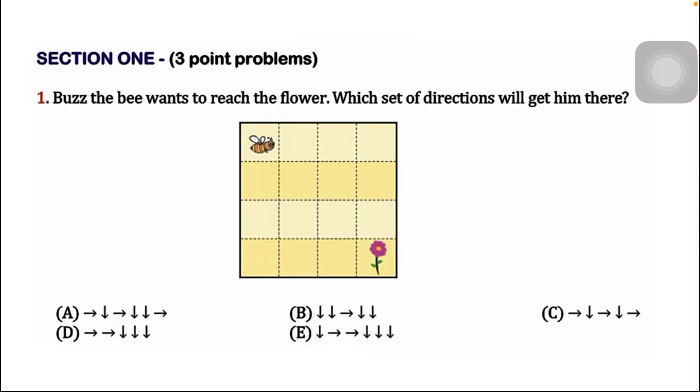The question is: Buzz the bee wants to reach the flower. Which set of directions will get him there? Sets of directions are available in different options at the bottom of the slide. You can check it easily from option A to E. If you put these instructions like arrows in the box, it will help the bee get to its destination, the flower.